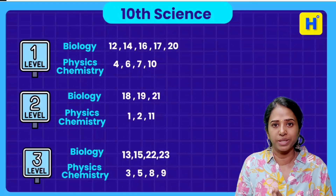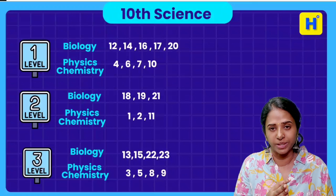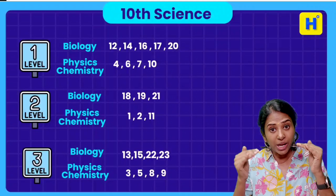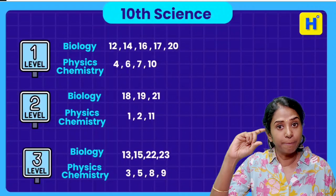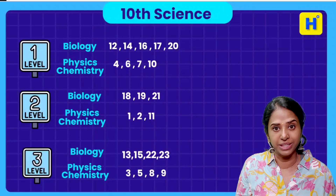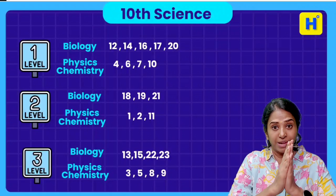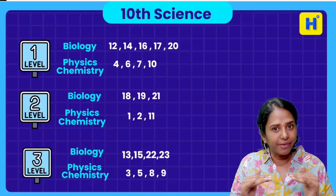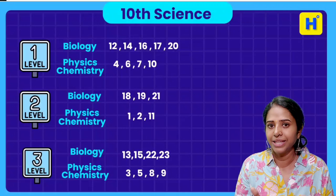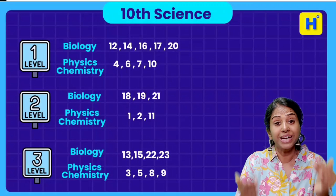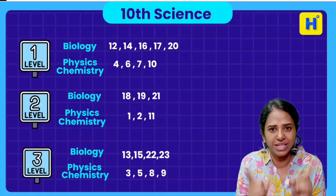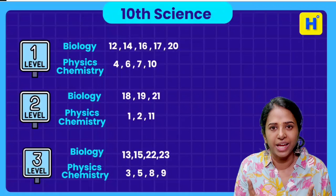First, level 1 topics: physics, chemistry topics, biology topics — that's level 2. So order of importance, order of weightage: level 1, level 2, level 3. Level 1 first complete, then that's level 2. Then come to level 3. Level 1, 2, and 3 — you can master all the topics. It's clear, it's very easy for you.